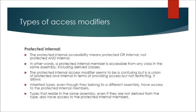The fifth type is Protected Internal. The protected internal accessibility means protected or internal — not protected and internal. A protected internal member is accessible from any class in the same assembly, including derived classes. The protected internal access modifier is a union of protected and internal in terms of providing access. It allows inherited types, even if they belong to a different assembly, to have access to the protected internal members. Additionally, types that reside in the same assembly, even if they are not derived from the type, also have access to the protected internal members.